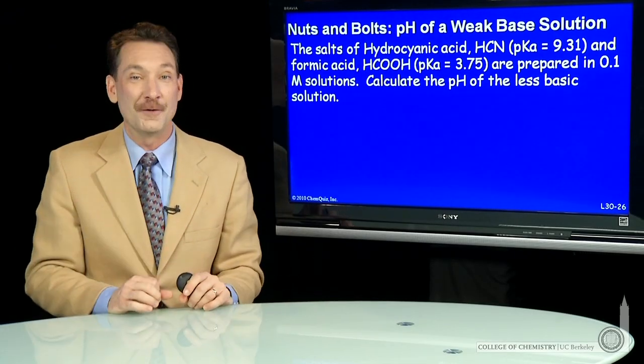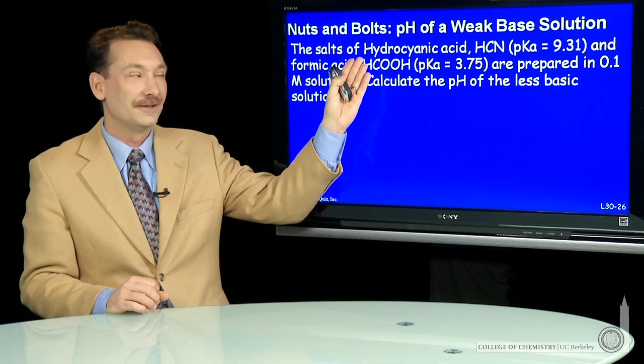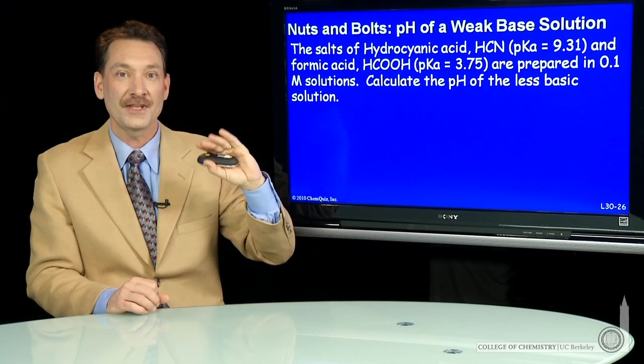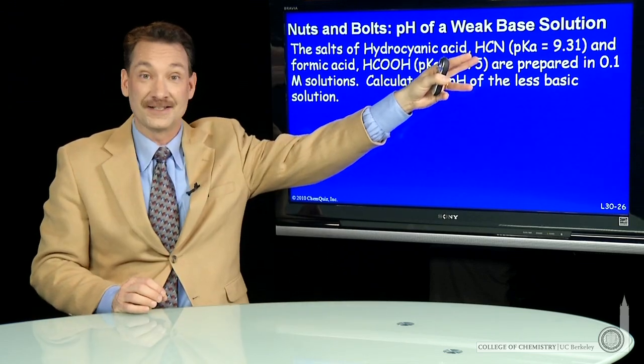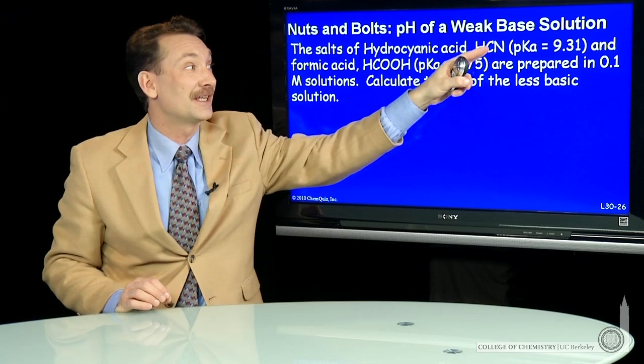Let's do some calculations with weak acids and weak bases. We're going to talk about the salt of hydrocyanic acid and formic acid. Now the salt is the compound that's formed when you react the acid with a strong base. You form the salt, you take the counter ion.